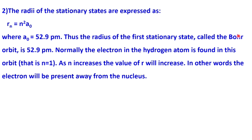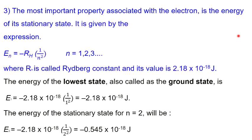The most important property associated with the electron is the energy of its stationary state. It is given by the expression: En is equal to negative RH into 1 by n squared, where n equals 1, 2, 3, etc. RH, the Rydberg constant, is equal to 2.18 into 10 raise to negative 18 joule.